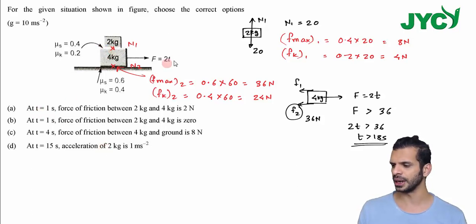So here look, at time equal to 1 second, when the force is 2 newton, 4 kg won't move. If 4 kg doesn't move, the friction between 2 kg and 4 kg is going to be 0, so my first option is wrong.